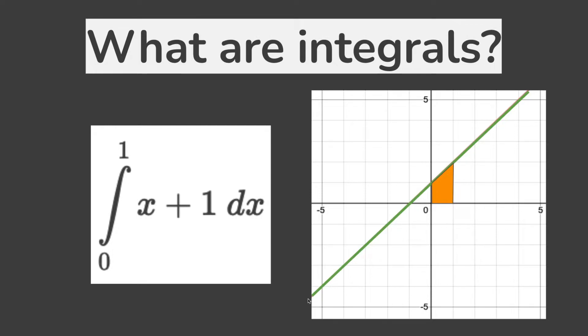As you can see, there's an integral on the left. We have the line x plus 1, which could be represented by the green line on the right. The symbol on the left of the x plus 1 is actually just telling you the boundaries of where we're calculating the integral.